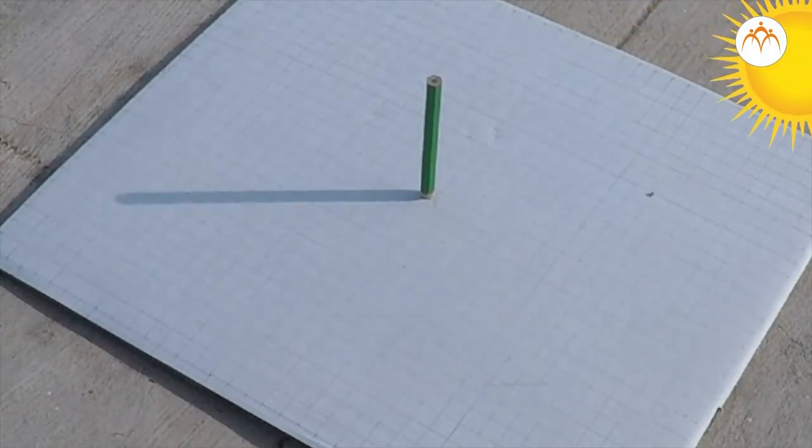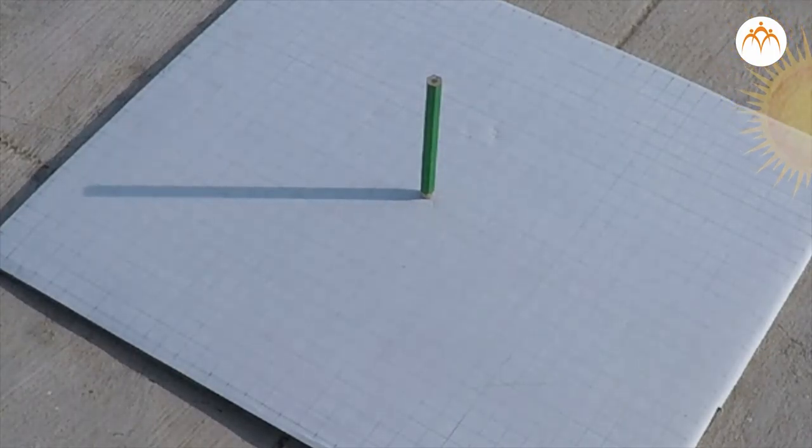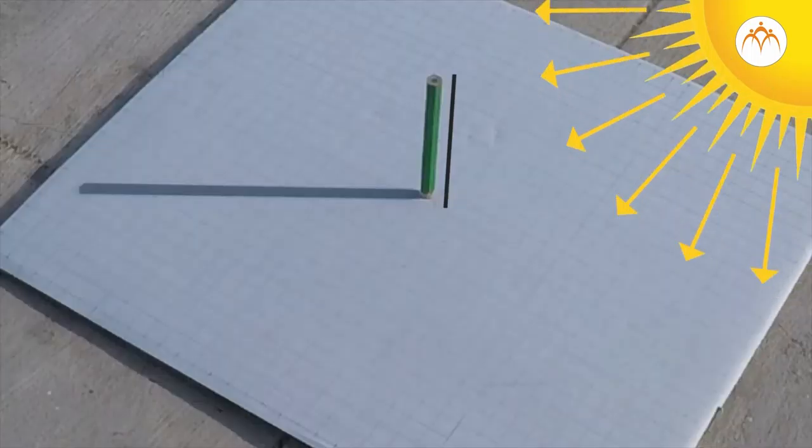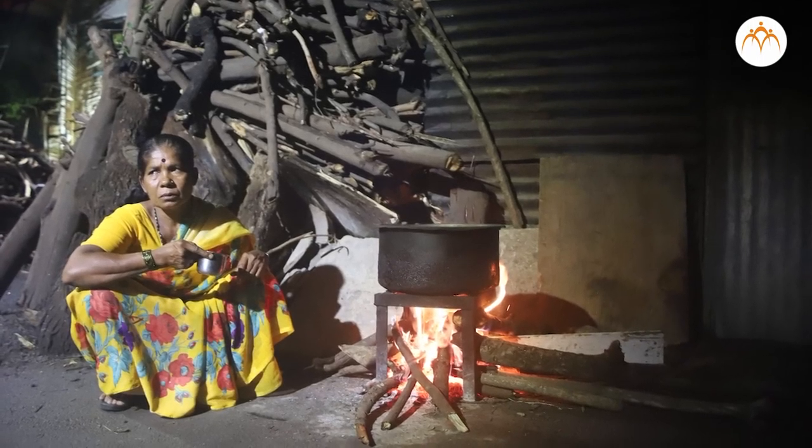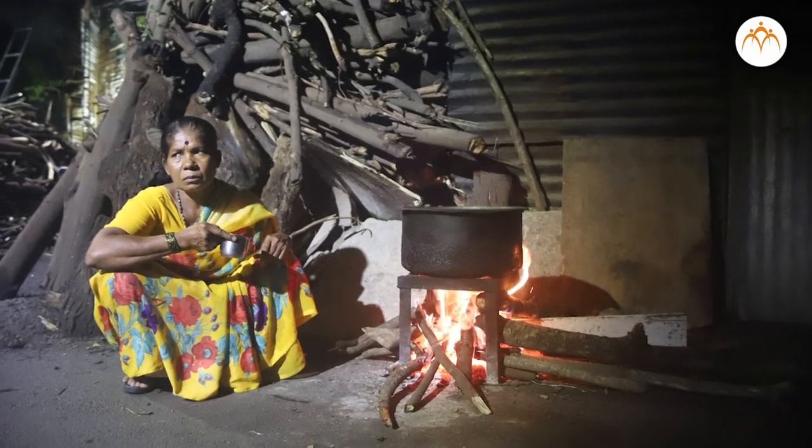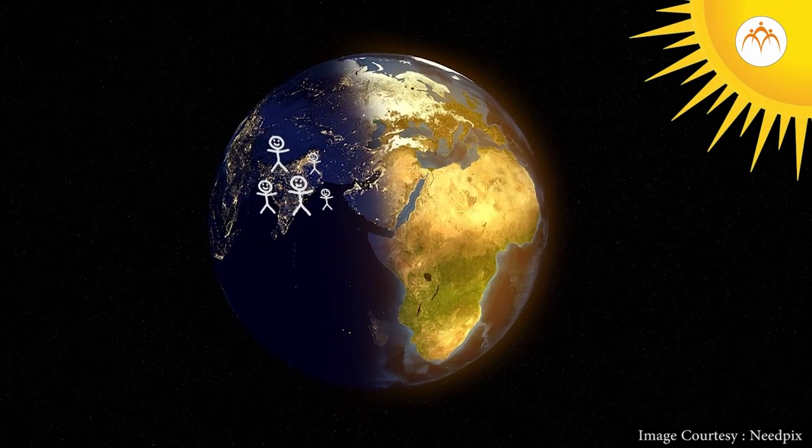As Sun moves in the sky its shadow also moves. Try this activity with different objects. Shape and size of the shadow changes with the movement of the Sun. We can say that when an object blocks sunlight, the area behind the object is dark.